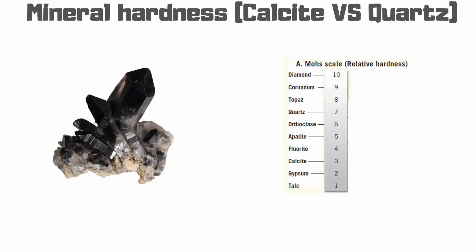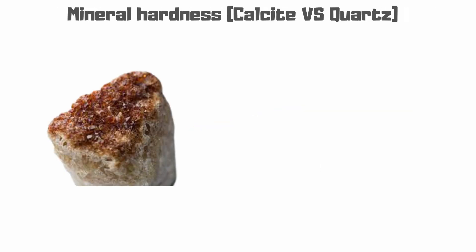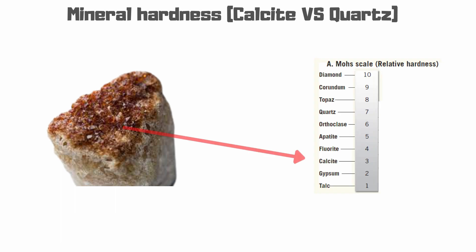In hardness, there are differences between the two. Quartz has a hardness of 7 on the Mohs scale, whereas calcite marble comes with a hardness of 3 on the scale.